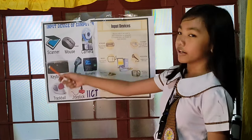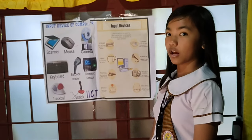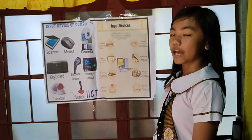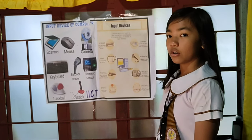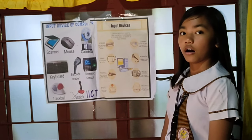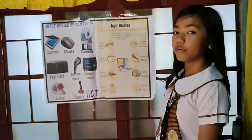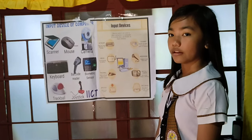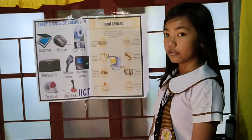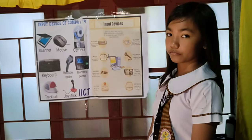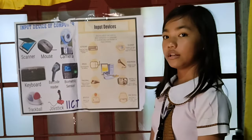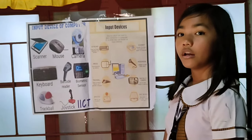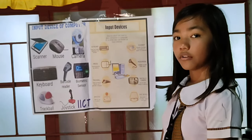Scanner works more like a photocopy machine. Digitizer converts analog information into digital form; it can convert a signal from television. Microphone converts sound that is then stored in digital form.